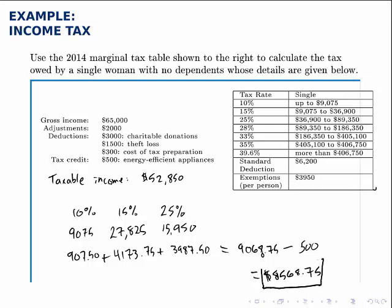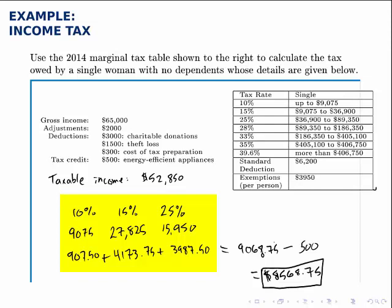That's the final answer. There are a lot of steps here, but remember: we start with the gross income, subtract adjustments, exemptions, and deductions to get to the taxable income, then split that taxable income into the brackets and calculate the appropriate percentage of each bracket, add up all those taxes, and then subtract off any tax credits that exist — and that gives the final tax. Make sure you do all the steps in the proper order to get to the right number for the tax that's owed.